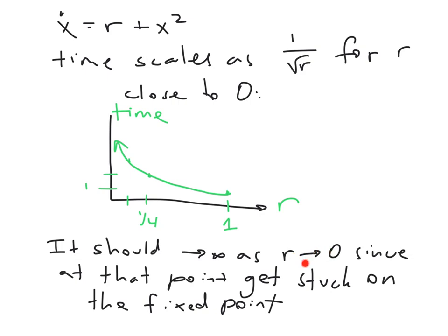And we expect that. It should go to infinity as r goes to 0, since at the exact point where r hits 0 in this formulation, there's going to be a fixed point, and we're going to get stuck at the fixed point instead of actually being able to traverse from negative infinity to infinity in x. It'll take an infinite amount of time to get through because we never actually get through. In this way, we can see that we really can see our closeness to the bifurcation in how slowly x is moving.